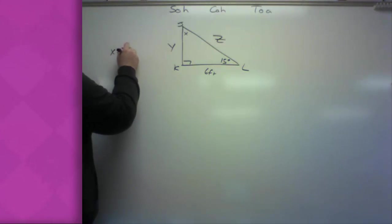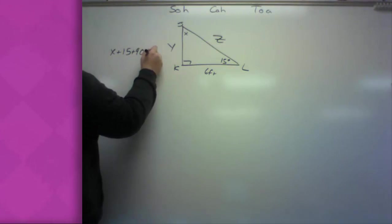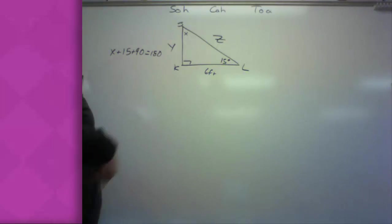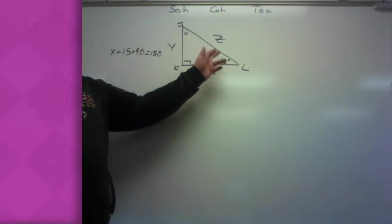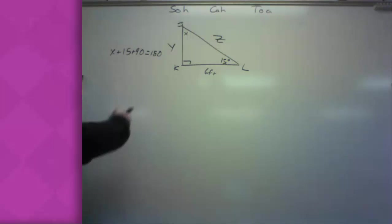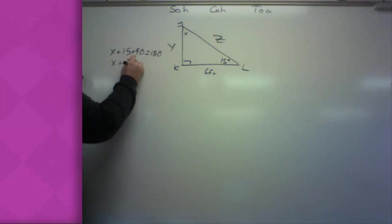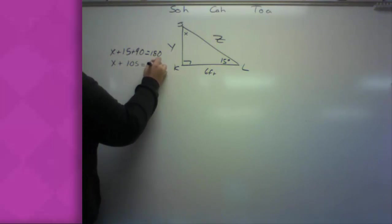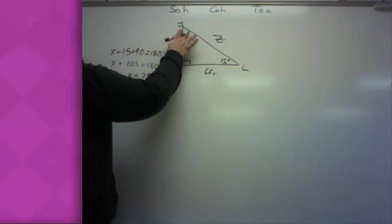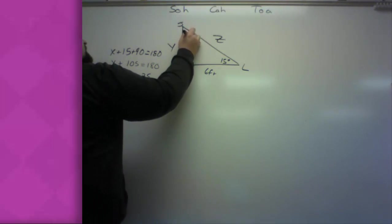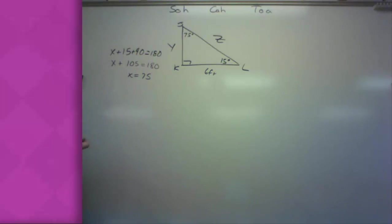X plus 15 plus 90 equals 180. Mr. H, what did you pull out of your pocket there? Well, all three angles of a triangle have to add up to 180. So if I'm solving here, X plus 105 equals 180. X is equal to 75. So I found the 75 degrees. Part one done. Now, to find Y and Z.